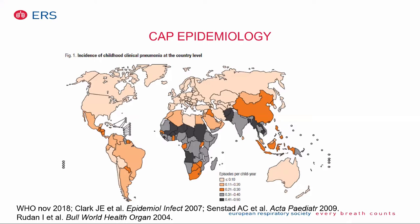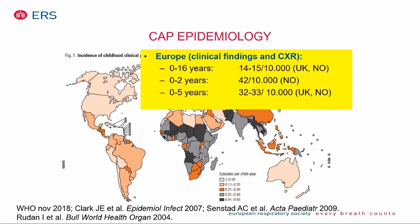In this map you can see the incidence of pneumonia worldwide, and as you can see there are big differences. There are quite a lot of participants from India where the incidence is quite high, and the incidence is highest in Africa below the Sahara. If you look at Europe, the incidence of CAP is around 14 to 15 per 10,000 children below the age of 16 years. This is based on clinical findings and chest X-ray, but if you only look at physician-diagnosed pneumonia, this incidence is around five times higher.